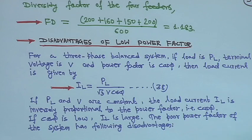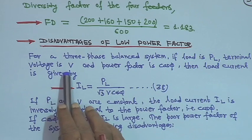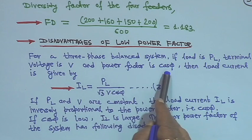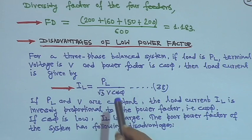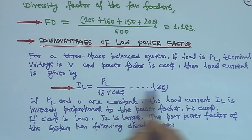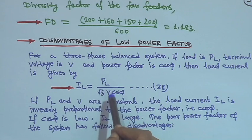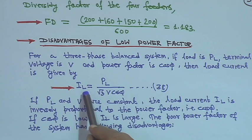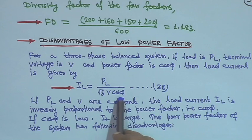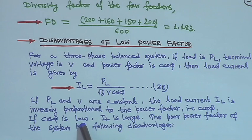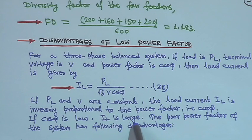Next are the disadvantages of low power factor. For a three-phase balanced system, if load is P_L, terminal voltage is V, and power factor is cos φ, then load current is given by I_L = P_L / (√3 · V · cos φ). If P_L and V are both constant, then I_L is inversely proportional to the power factor. If cos φ is low, then I_L is large. So the poor power factor of the system has the following disadvantages.